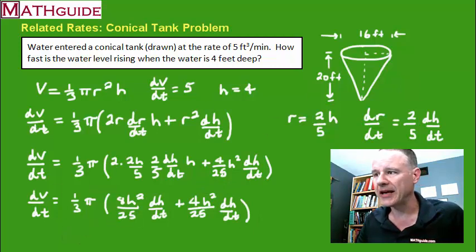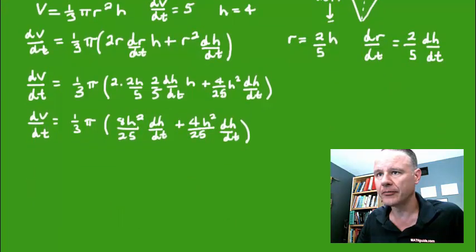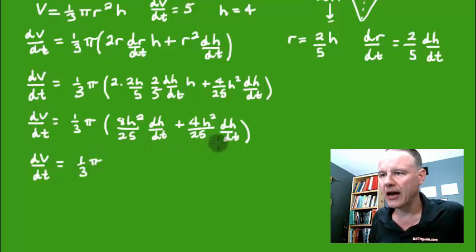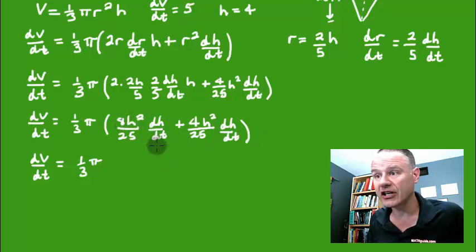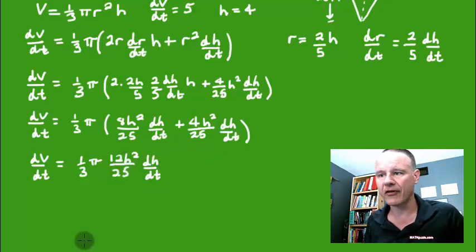I'm going to need a little bit more space so I'm going to roll down a little bit. Here we're going to get dV/dt. We're going to get one third - now these are like terms, they both have dh/dt, they both have h squared, I can add them. Eight h squared dh/dts plus four h squared dh/dts - yes they have a common denominator so I'm adding the numerators - I get 12 h squared dh/dts over 25 because they have a common denominator, adding the two fractions.